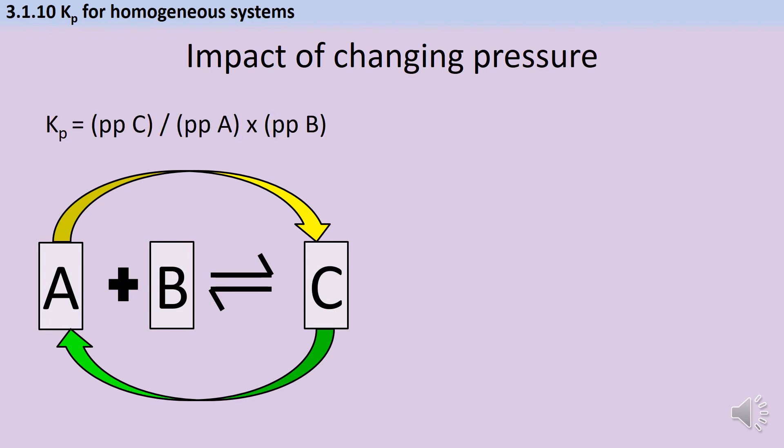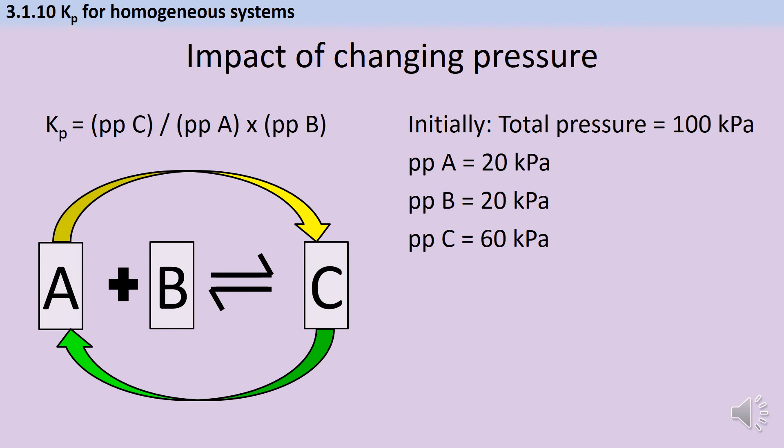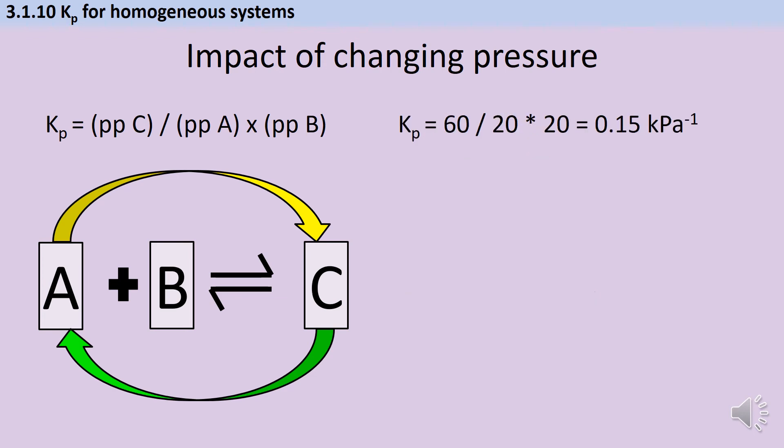So just to refresh your memory, our expression for Kp looked a bit like this. We started out with these partial pressures, which added up to a total of 100 kilopascals. And therefore, our initial value for Kp was 0.15 kilopascals to the minus one. Now we know that as we increase the pressure, we're going to make more of C. And that will have an effect on the value of Kp.